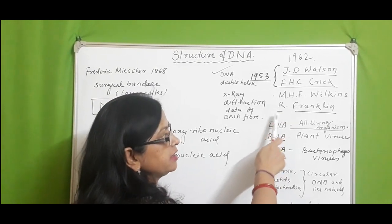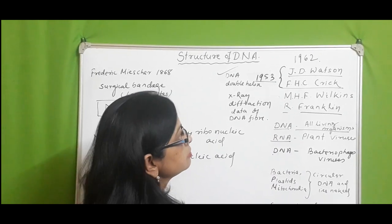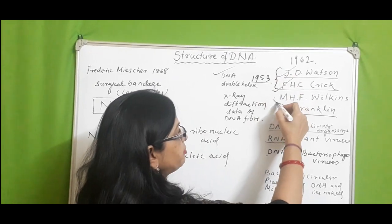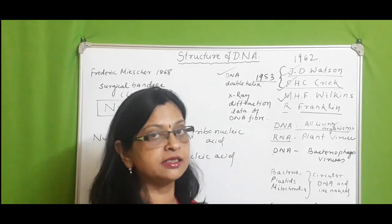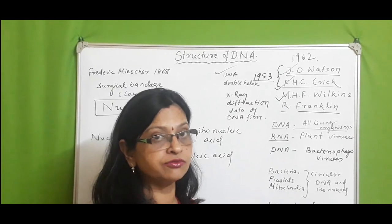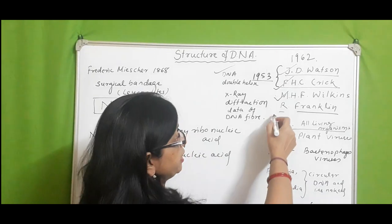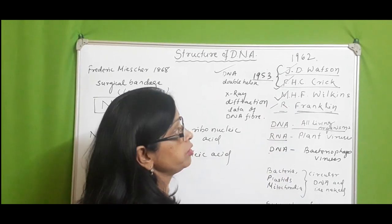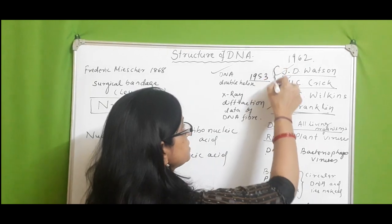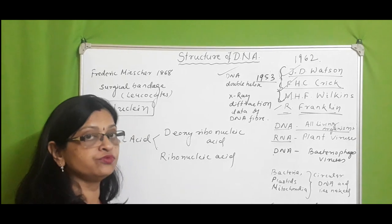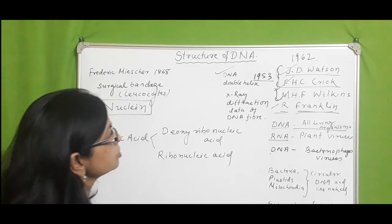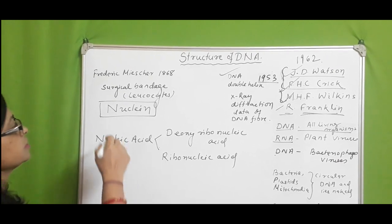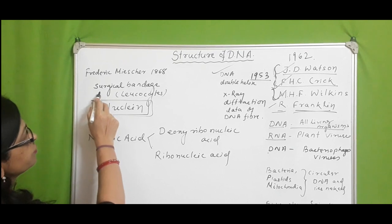The X-ray diffraction data was deduced by M.H.F. Wilkins and Rosalind Franklin. In 1962, the three scientists J.D. Watson, F.C. Crick, and M.H.F. Wilkins were awarded the Nobel Prize for Medicine for their work. You might ask why Rosalind Franklin was not awarded — she died of cancer, and the Nobel Prize is not awarded posthumously.